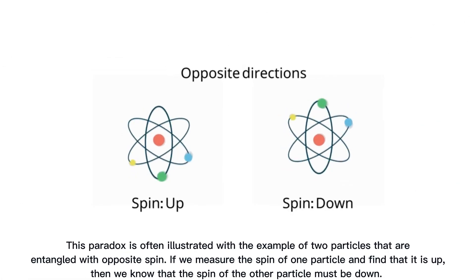This paradox is often illustrated with the example of two particles that are entangled with opposite spin. If we measure the spin of one particle and find that it is up, then we know that the spin of the other particle must be down.